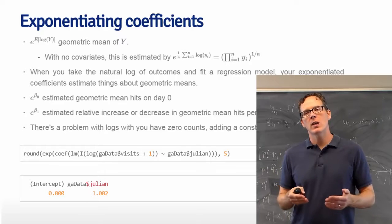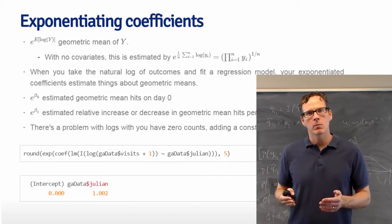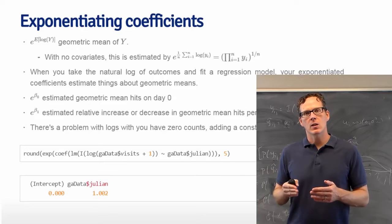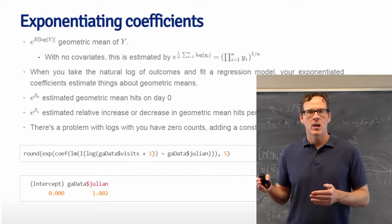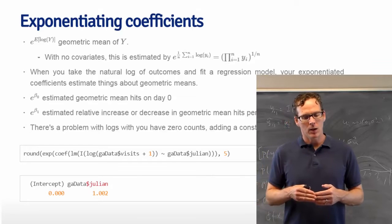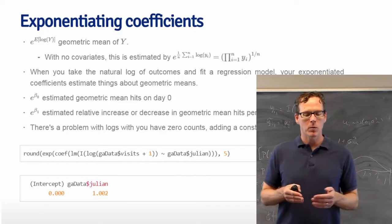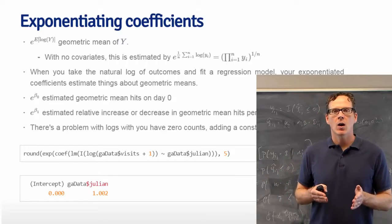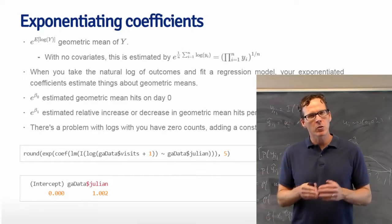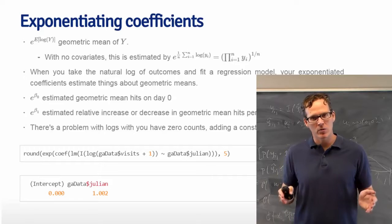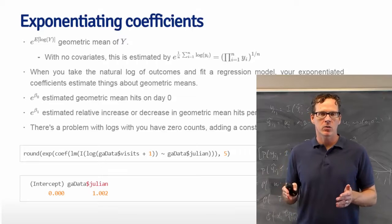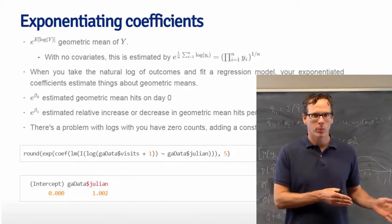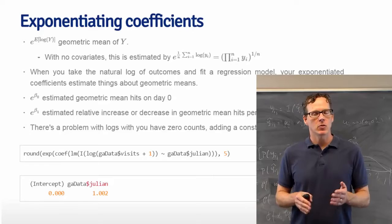Probably to make the intercept more interpretable, what we should have done is subtracted off the earliest date that we saw and started counting days from there from all of the remaining days in our data set. And then the intercept would be the, e to the estimated intercept would be the geometric mean hits on the first day of this data set. So that's a small point, but it doesn't change the fitted model. It doesn't change the slope or anything like that to shift around the intercept. However, nonetheless, if you want an interpretable intercept, as we know from earlier on in the class, you have to do something like that.